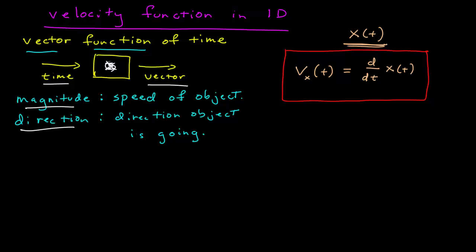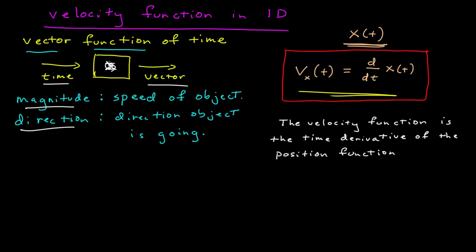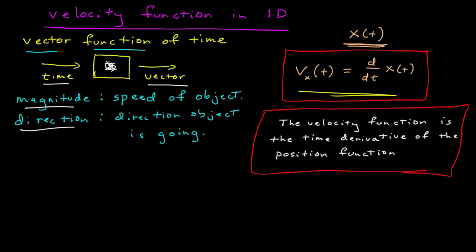This is so important that it's best remembered in words rather than equations, because the notation can change when going to 3D. But the actual definition is the same in words regardless of the mathematical representation: the velocity function is the time derivative of the position function. Regardless of the dimension or axis, this statement is always true and allows you to find the velocity function given a position function.